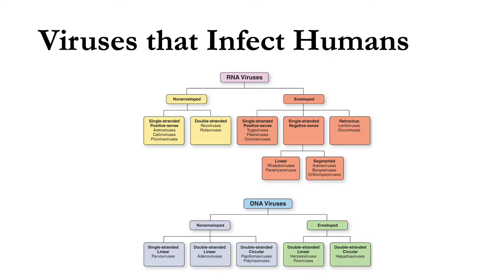Some notable examples of RNA viruses: under non-enveloped double-stranded RNA, we have the rotavirus, which causes cough, colds, and diarrhea among infants and toddlers. Among enveloped RNA viruses, notable are the positive-sense single-stranded coronaviruses — these cause MERS-CoV, SARS-CoV, and SARS-CoV-2 (COVID-19). Enveloped negative-sense single-stranded linear RNA viruses include rhabdoviruses (which cause rabies) and paramyxoviruses, which include the paramyxovirus causing mumps and morbillivirus causing measles.